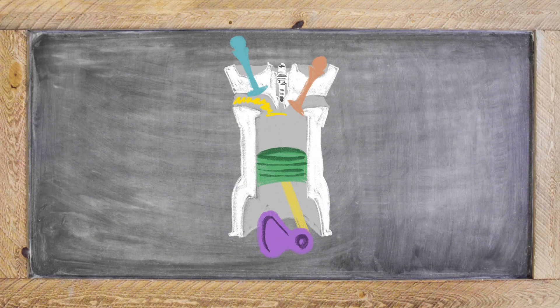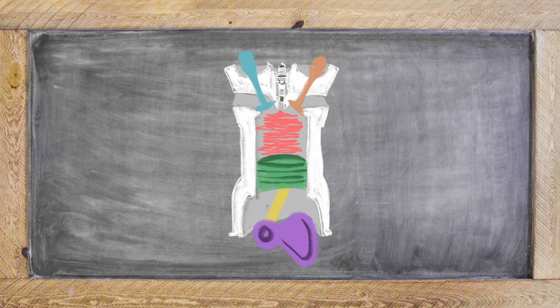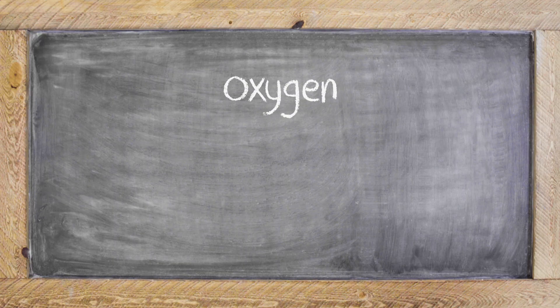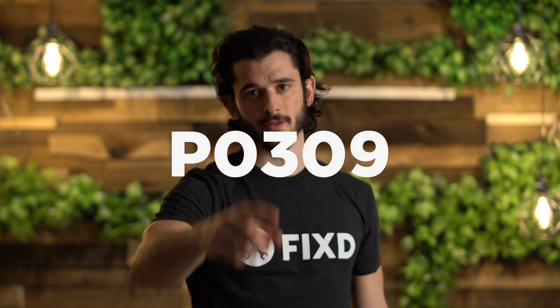Your cylinder intakes the fuel-oxygen mix. The piston compresses that mix. The spark plug ignites the mix to give power. And finally, your cylinder is open to release the exhaust. Combustion requires three elements: oxygen, fuel, and spark. The intake stroke introduces oxygen and fuel, and the power stroke provides a spark. If any of these three components are messed up, the process gets out of sync and you get this error code.